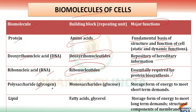The fourth one is the polysaccharide, for example glycogen. Its repeating unit is monosaccharide — glucose is an example of monosaccharide. The function of polysaccharide is that it is the storage form of energy to meet short-term demands. Students, try to remember that polysaccharides store energy to meet short-term demands.